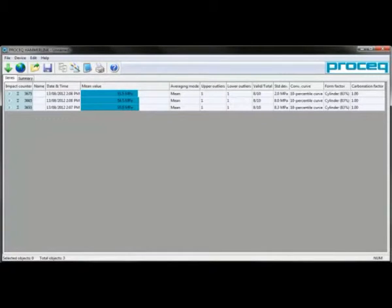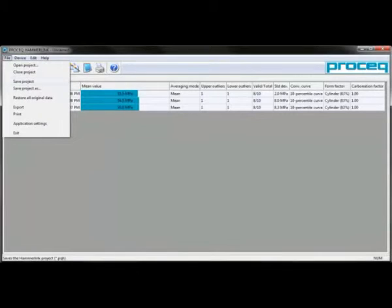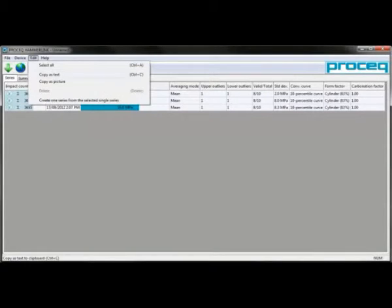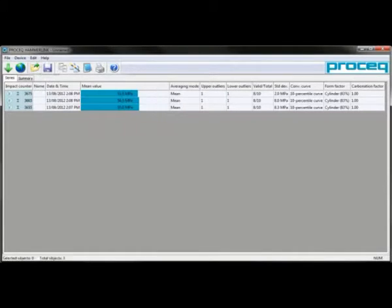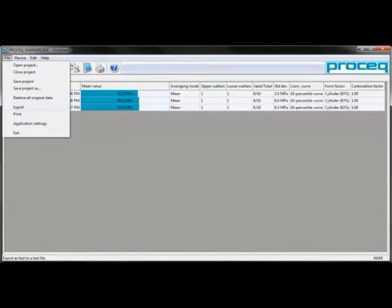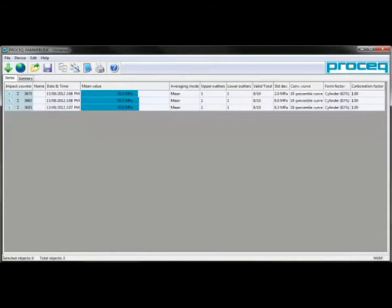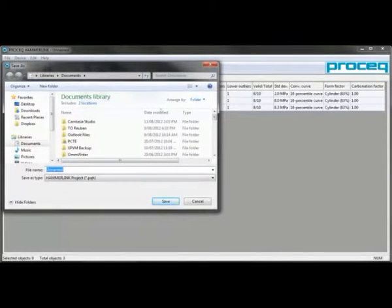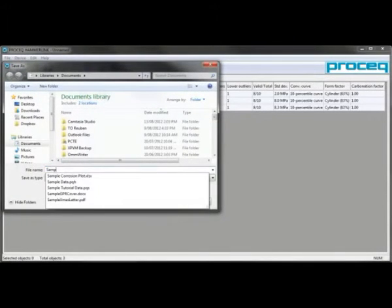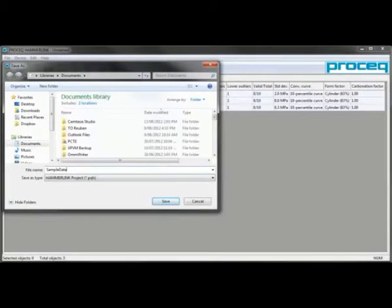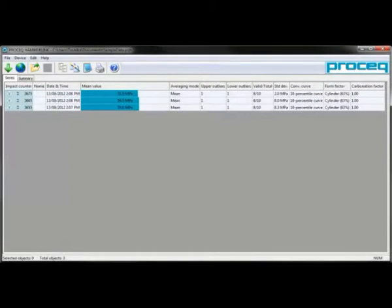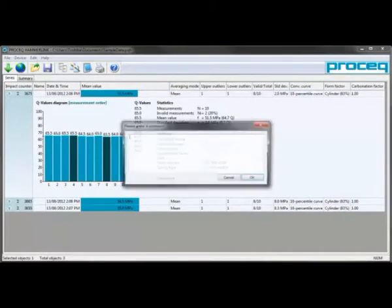We have a number of output options. We can copy the data as a text file or an image. We can also export to a text file or print the image. If we choose to export, we have the option to save a text file. We can also save our project under any name we choose. Finally we can leave a comment for each series of values.